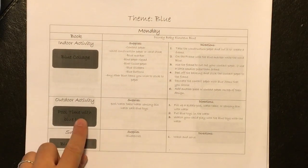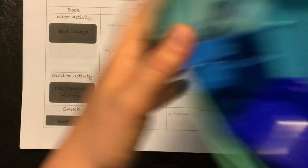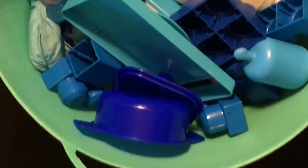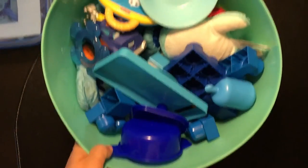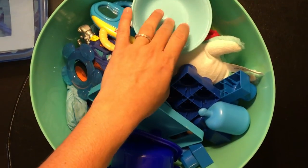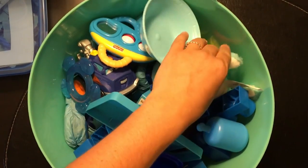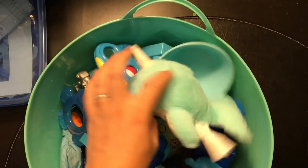And then our outdoor activity is pool time with blue toys. And what I did was I collected all of our blue toys that we own, or that I found, until our bin was full. And what I'll do is if they can go into the pool, like this cup, some of the blocks, I'll move those to our little kitty pool. And then if they can't go to the pool, obviously they will stay inside.